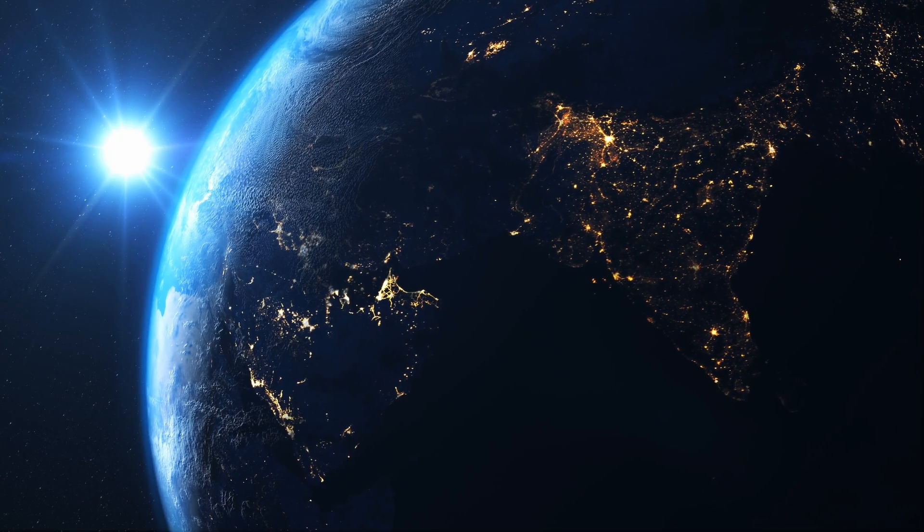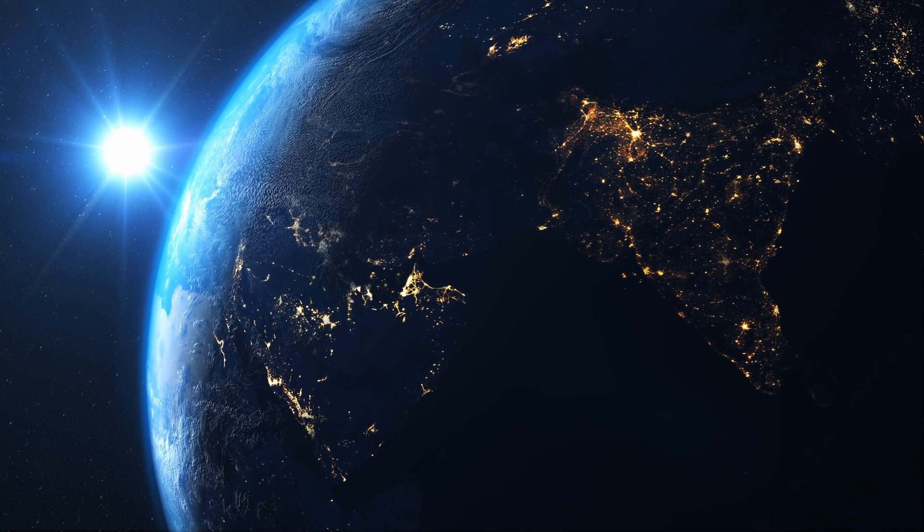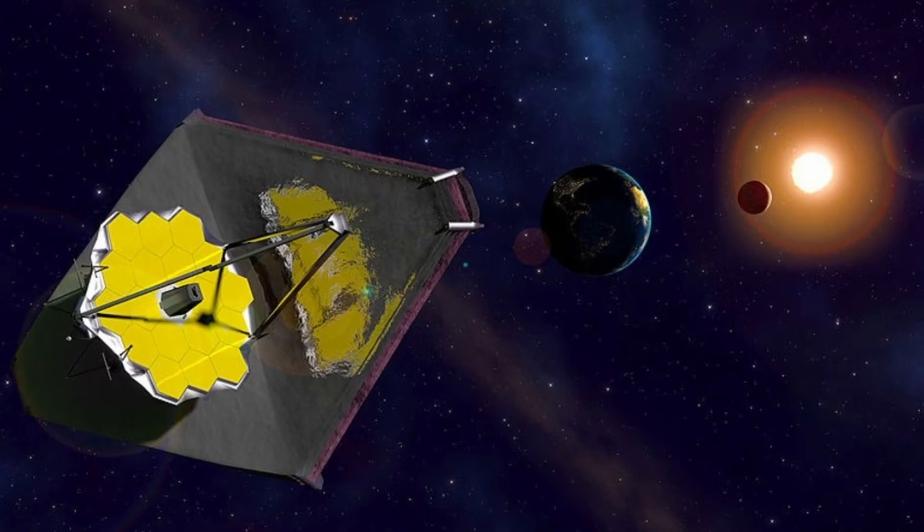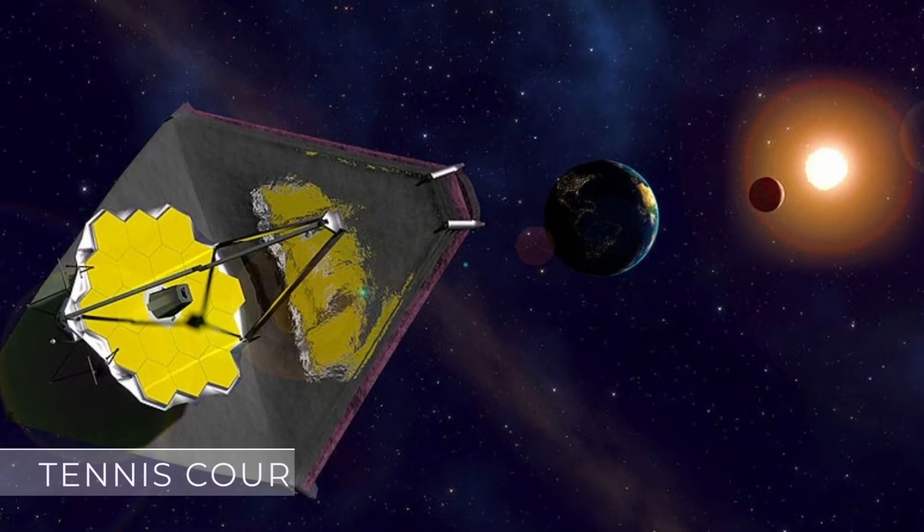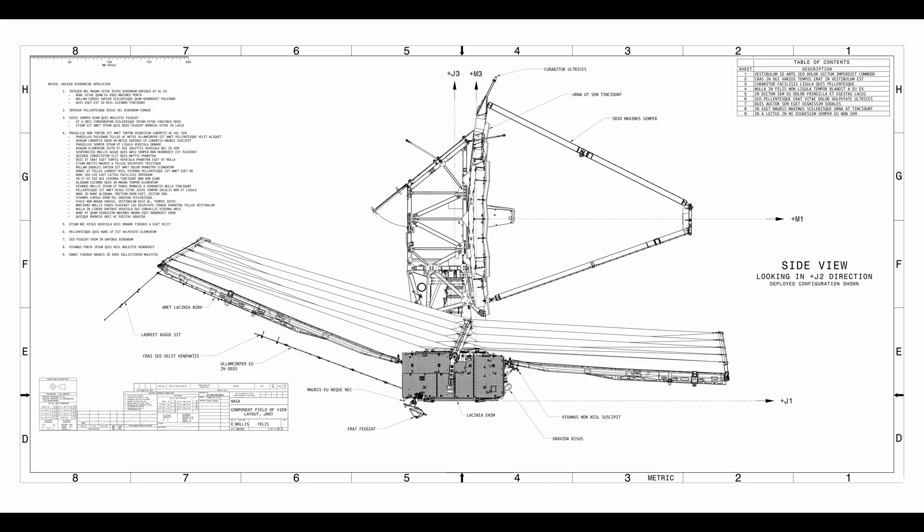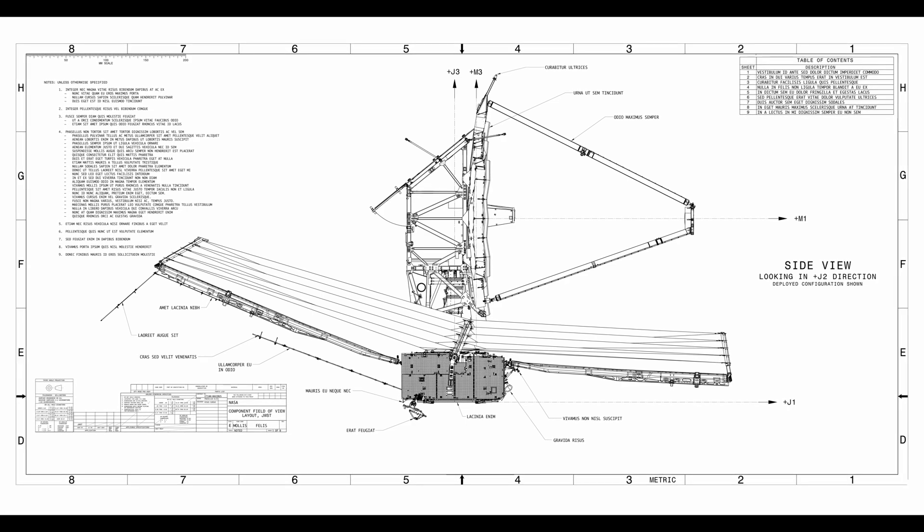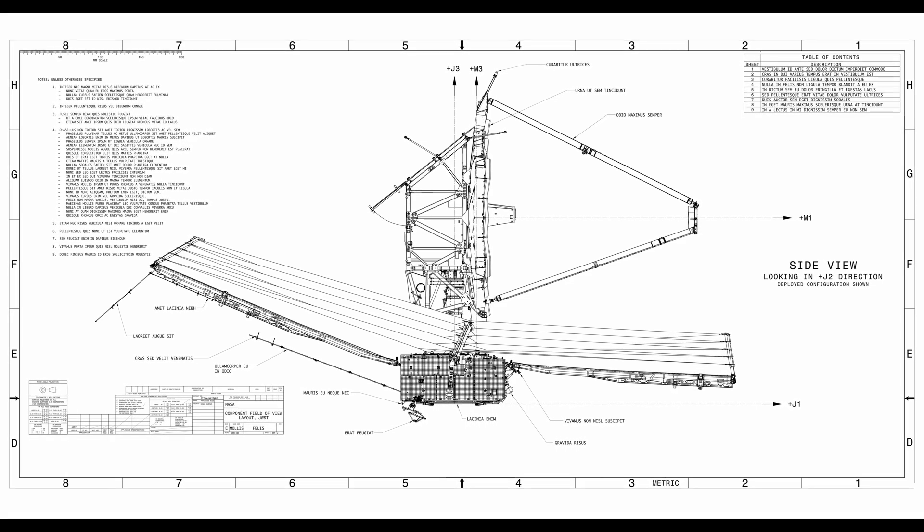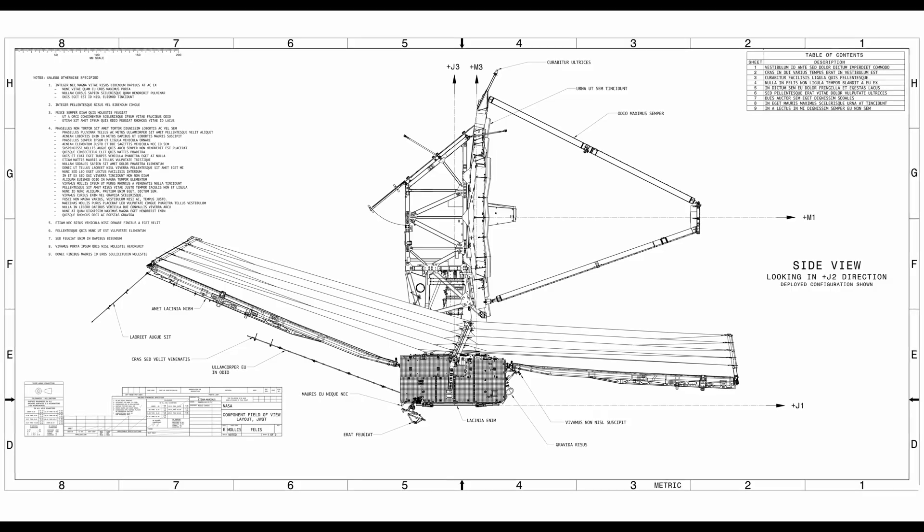For this, it also had to be well positioned between Earth, the Sun, and the Moon, in addition to having a shield as big as a tennis court, which protects it from sunlight and prevents overheating. And the entire structure had to be meticulously planned and executed so that the telescope could also withstand the heat and pressure of the space launch.